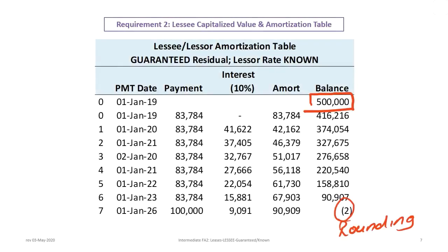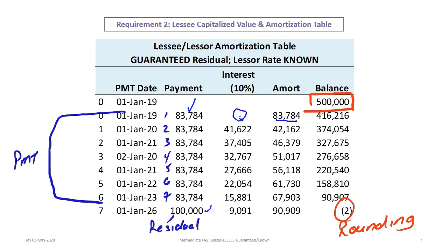Now we'll show the amortization table — not usually required on an exam, but it illustrates where all the numbers come from. We begin with a balance of $500,000. At 10% interest on the beginning balance, the first payment at inception is all principal ($83,784 with no interest). The residual is guaranteed, so there are seven payments of $83,784 plus the $100,000 residual at the end, over a seven-year lease term.